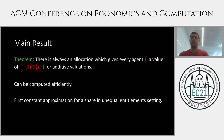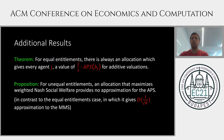Our main result is an algorithm that returns an allocation giving every agent at least 3/5 of their any-price share, for arbitrary entitlements and additive valuations. It can be computed efficiently, even without knowing the value of the any-price share. This is the first constant approximation for a share in an unequal entitlement setting. Additionally, we show how to achieve a 2/3 approximation to the APS in the special case of equal entitlements, and we show that the allocation maximizing Nash social welfare does not give any approximation to the APS in the unequal entitlement case.